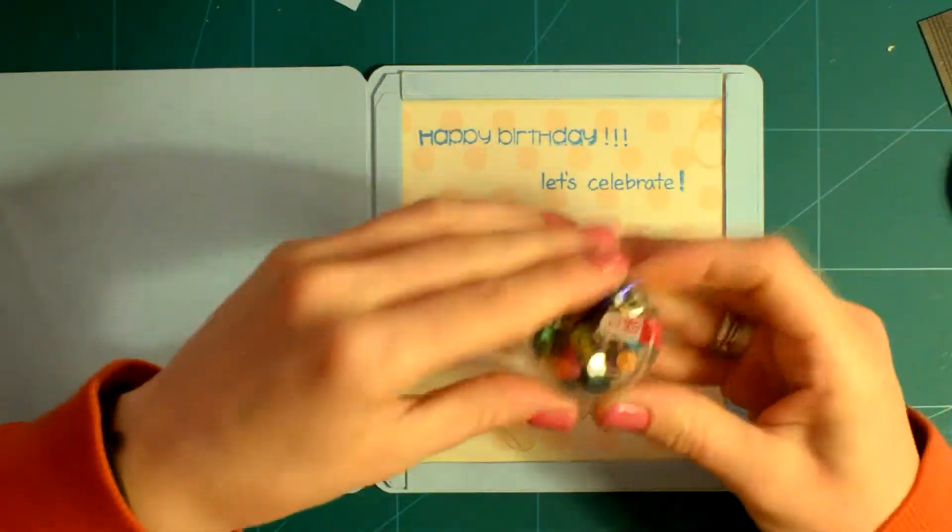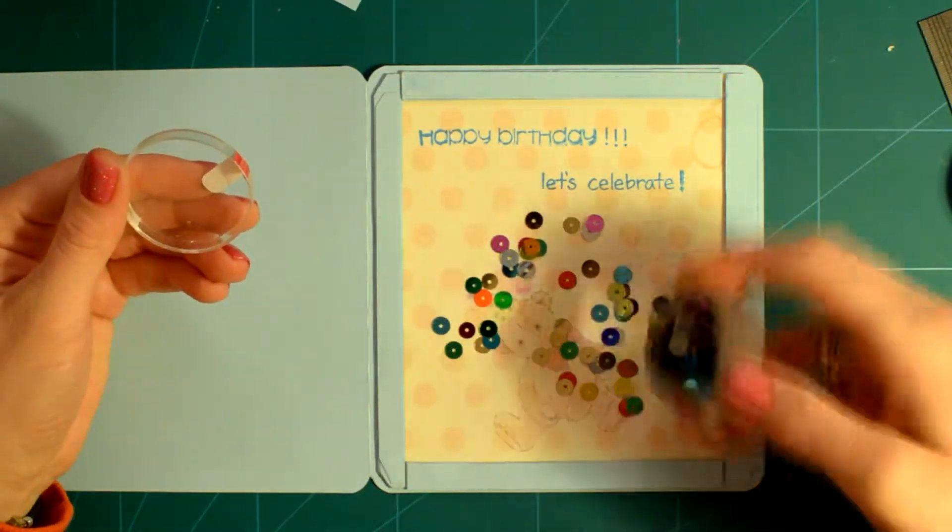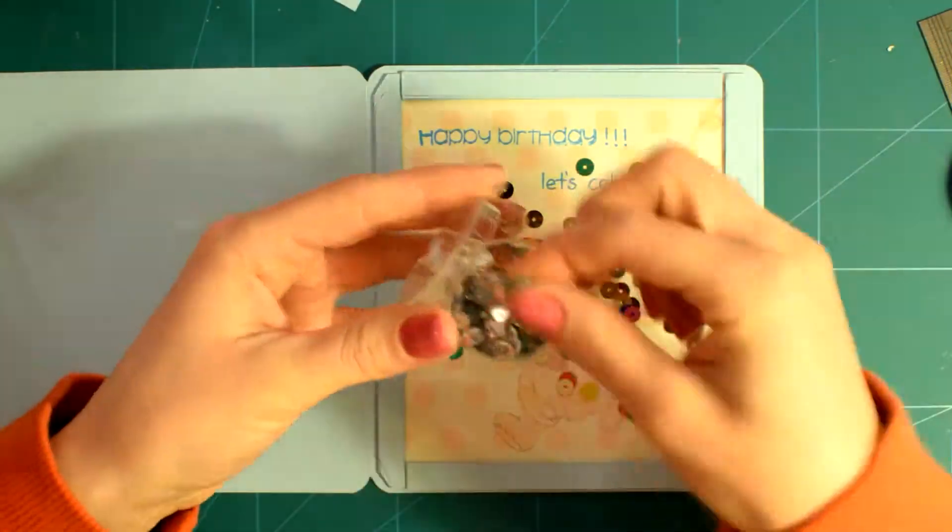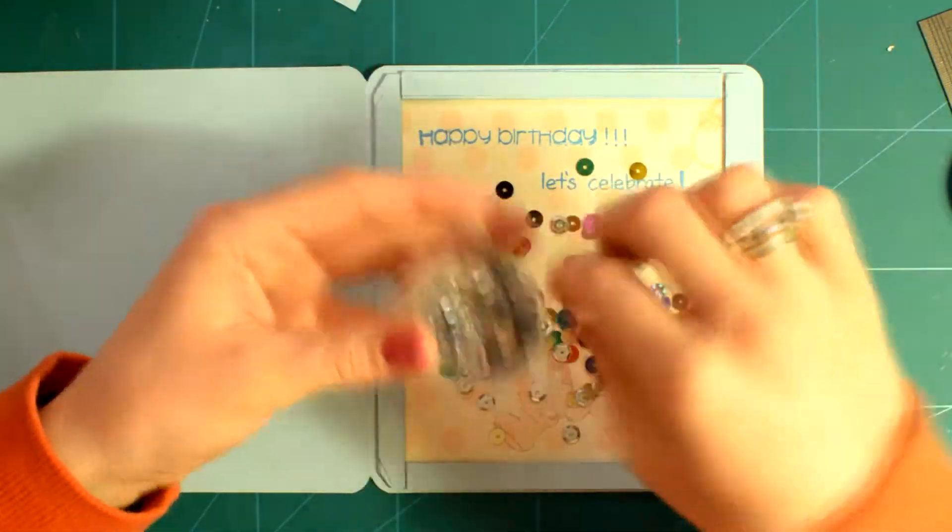I added colorful and silver sequins and sealed the window frame using the Tombow Runner Tape once again.